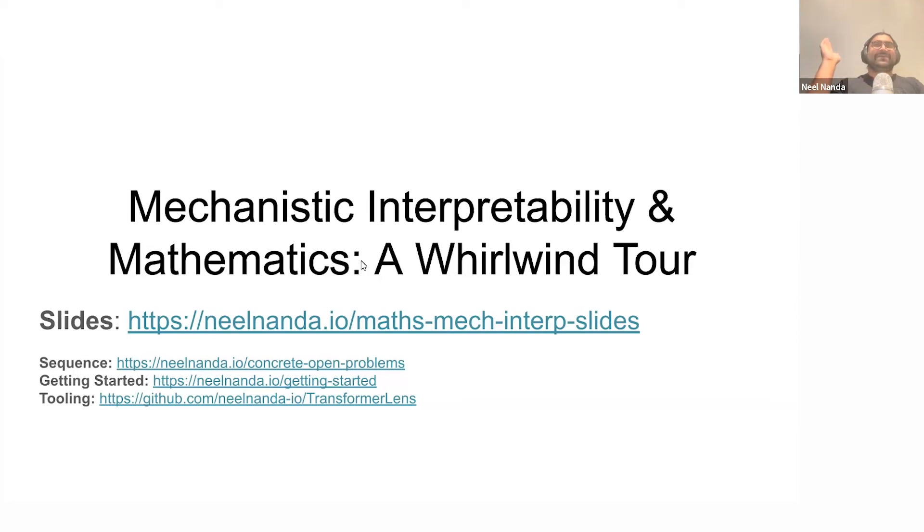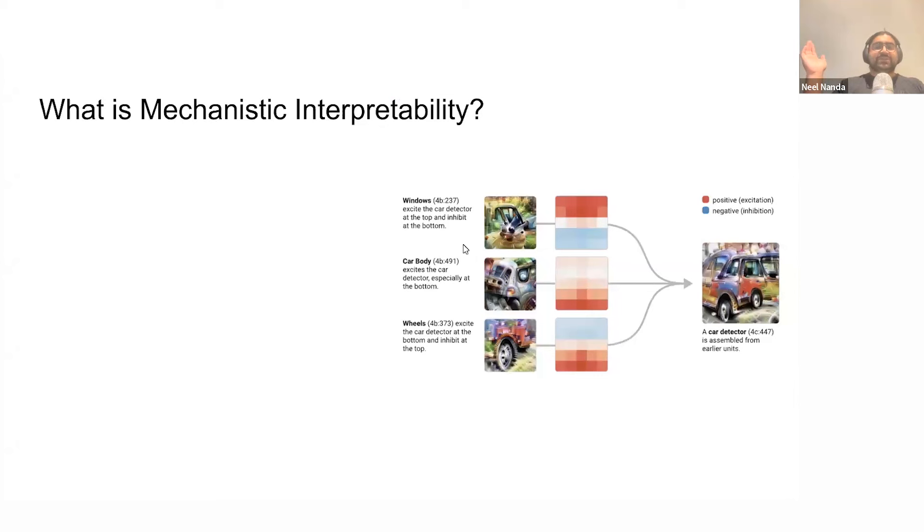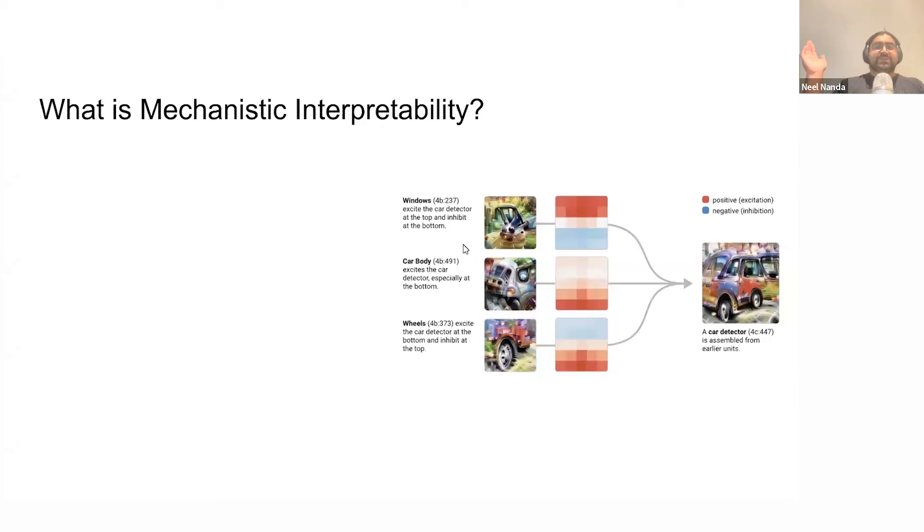So without further ado, what is mechanistic interpretability? The field is based on this core hypothesis that a trained neural network learns human comprehensible algorithms, and that these algorithms can, in theory, be understood if we can learn how to reverse engineer them and how to make them legible to us. The model isn't incentivized to learn algorithms that we can easily understand and decode, but it is incentivized to learn structure that has some meaning, if we can figure out how the meaning works. And the science is a constant balance between trying to achieve a rigorous understanding of what's going on without just reading tea leaves and tricking yourself into thinking you know what's going on.